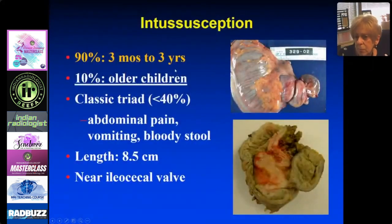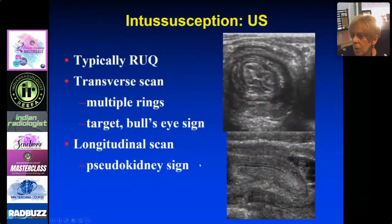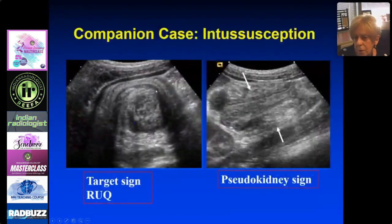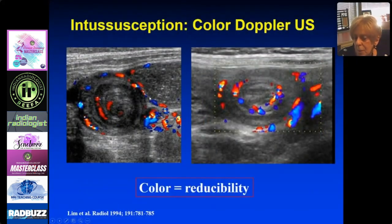Typically three months to three years, with 10% in older children. Patients have abdominal pain, may have vomiting and bloody stool. The ileum goes into the colon, with a total length usually around 8.5 centimeters. On ultrasound, you see multiple layers — the target sign or bullseye sign — and if you lay it out, the pseudokidney sign. On color Doppler, if the bowel is viable, you see lots of color flow, which is helpful before attempting reduction. Here is another case with no flow — reduction was attempted but failed, and ischemic bowel was found at surgery.